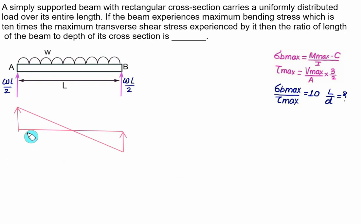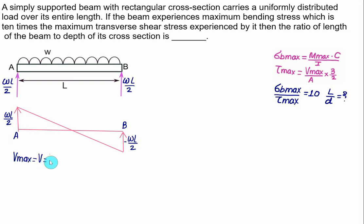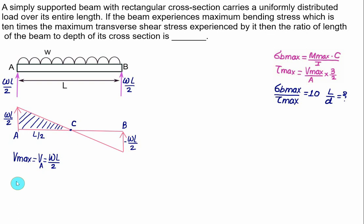The shear force diagram shows maximum shear force at A and B, each equal to WL/2. The shear force changes sign at midpoint C where AC = L/2, and the area of the shear force triangle gives the maximum bending moment at C.